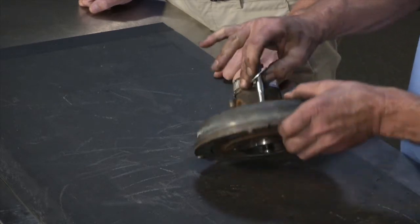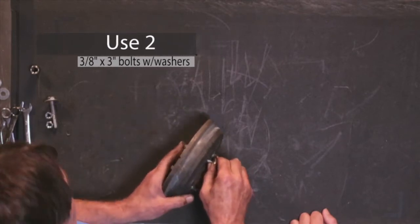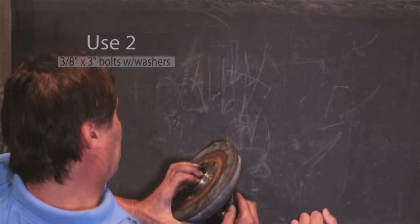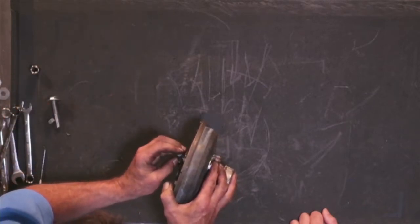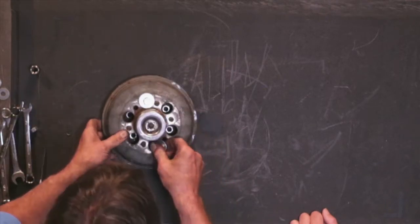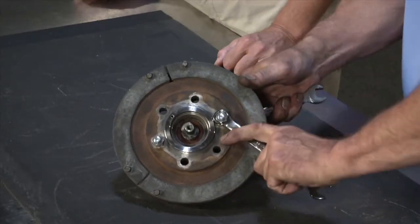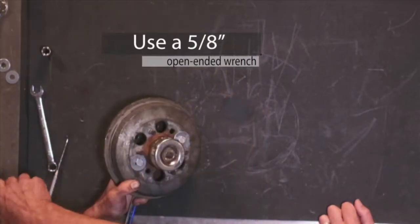Next, we will need to compress the clutch using two 3/8 inch by 3 inch bolts with washers. Place the bolts in through any two opposite mounting holes at the back of the fan clutch. Using the washers and nuts at the front of the fan clutch, tighten the nuts enough to slightly compress the fan clutch. It is important not to over-compress the fan clutch. Once the fan clutch is slightly compressed, use a 5/8 inch open-ended wrench to secure the rear air shaft at the back of the clutch. You just need to hold onto it to keep it from spinning.